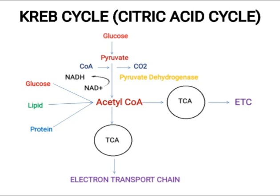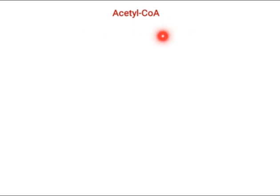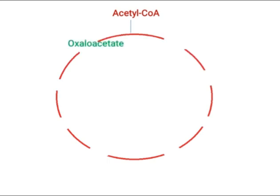The link for the previous lecture will be given in the description so you can watch that video. Now coming towards the Krebs cycle — as you know, we have Acetyl CoA, which is a 2-carbon containing compound, and it reacts with oxaloacetate, which is a 4-carbon containing compound. When a 2-carbon compound reacts with a 4-carbon compound, we get a 6-carbon containing compound.